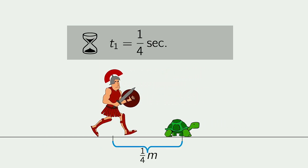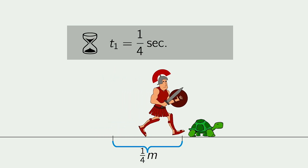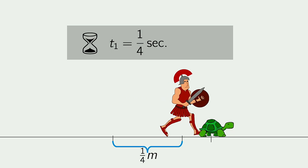Then, the tortoise will have moved by a quarter of a meter, so this is the new distance between them. Achilles runs this new distance in 1 sixteenth of a second, so t2 equals 1 fourth plus 1 sixteenth. The tortoise then has moved by 1 sixteenth of a meter.